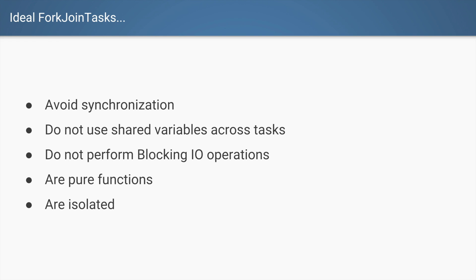For the fork join pool to perform well, your compute method should follow these guidelines: avoid any kind of synchronization, do not use shared variables, and do not perform any blocking IO operations. You want a pure function that is completely isolated. This ensures your thread can keep creating subtasks and executing them as quickly as possible without worrying about synchronization or context switching. If you don't follow these guidelines the code will still work, but performance will be degraded. To achieve optimal performance, follow these guidelines.